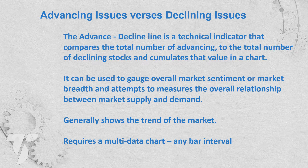In order to know whether the Arms Index is skewed because of volume, you have to look at the volume and look at the advance-decline line anyway. I don't want to do that much work — if I need to look at the advance-decline line or the advance-decline line of volume, I'll just look at those two directly. So I do use advancing issues versus declining issues. It compares the total number of advancing issues to the total number of declining issues and cumulates it in the chart. The actual cumulative value doesn't matter — what matters is the slope of that indicator. Is the trend up, down, is it reversing? It attempts to measure the overall relationship between supply and demand — are there more buyers or more sellers?